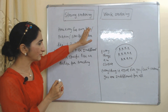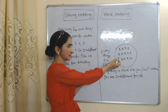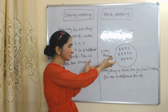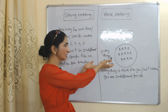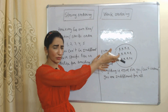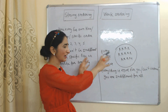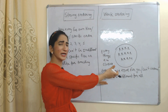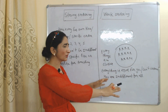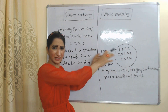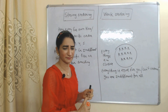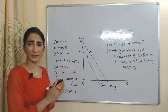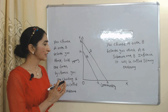On the other hand, under weak ordering, everything is in a cluster — everything is equal for you. Things don't have any number or order, so you cannot rank them. Everything is the same for you and you are indifferent to all, meaning you don't have any specific like or dislike. Now with the help of a diagram, we will understand weak ordering and strong ordering.